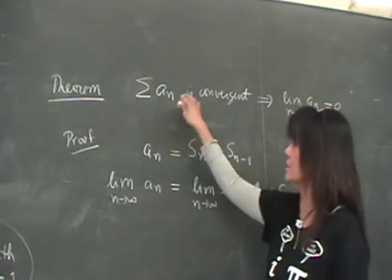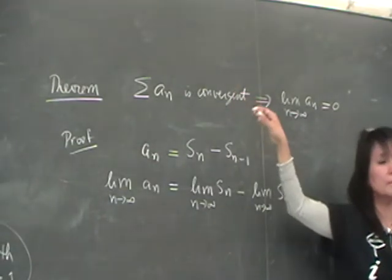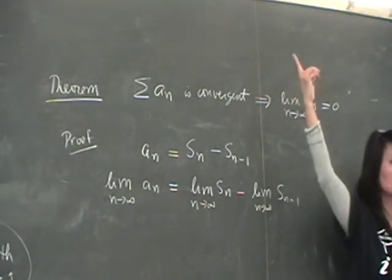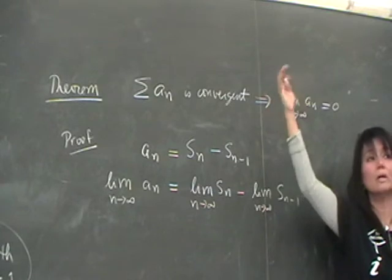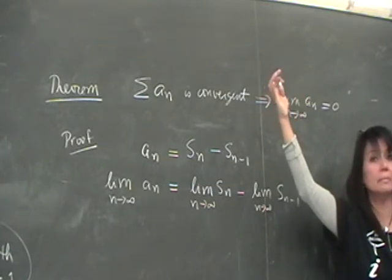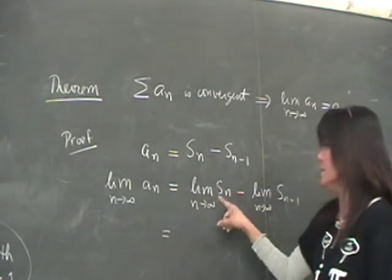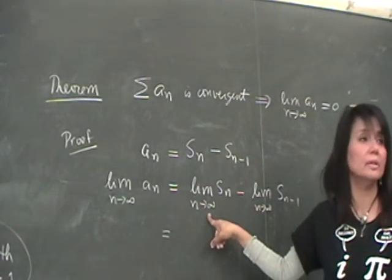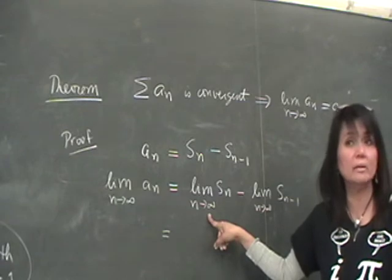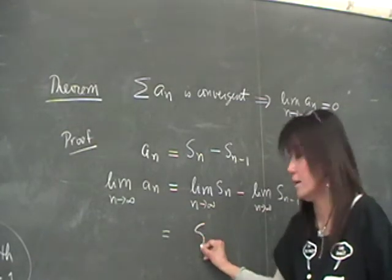Now because the series is convergent, that means to say we can talk of a number, which we called the sum, right? Now, the limit of S of N as N becomes large is actually that sum, right? Which we called S.